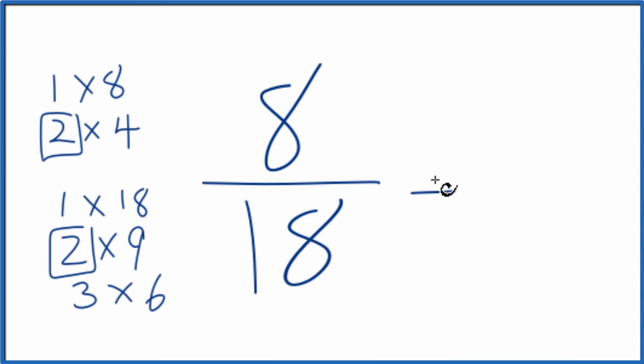8 divided by 2 equals 4, and then 18 divided by 2 equals 9.